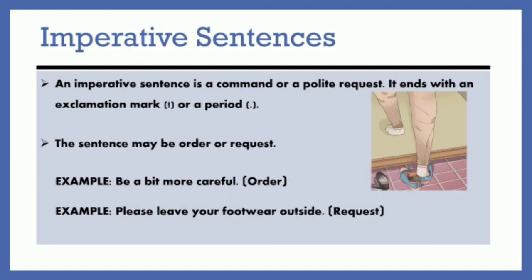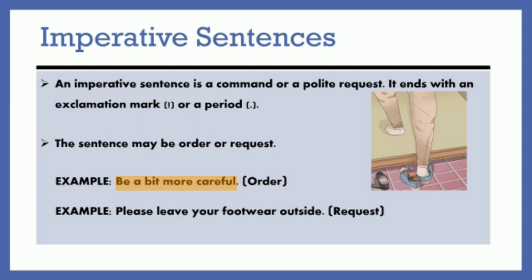Now let me come to the imperative sentence. An imperative sentence is a command or a polite request. It ends with an exclamation mark or a period. The sentence may be an order or a request — it is the tone of the speaker that decides. For example, 'Be a bit more careful' — that's an order. And if somebody says, 'Please leave your footwear outside,' that automatically becomes a request because of the polite usage of the sentence.